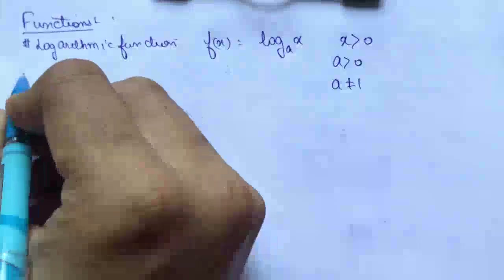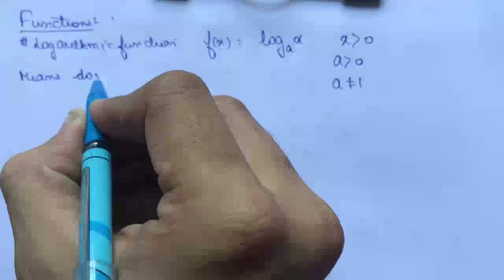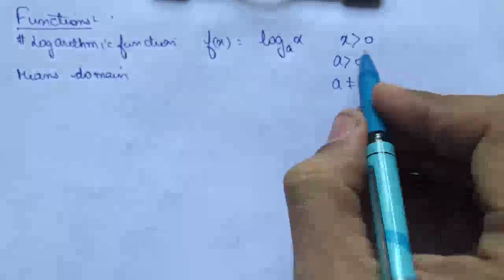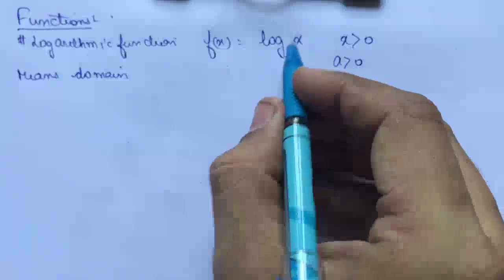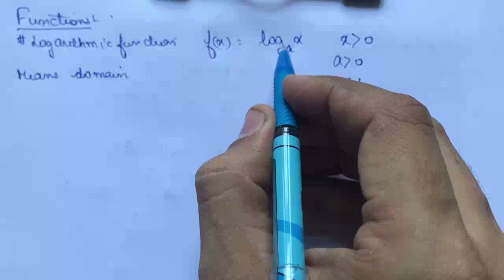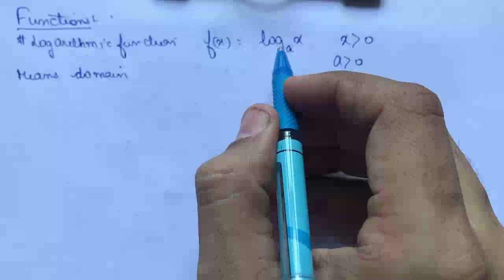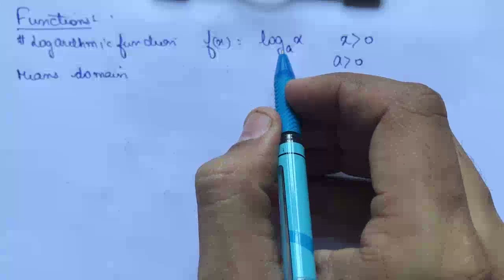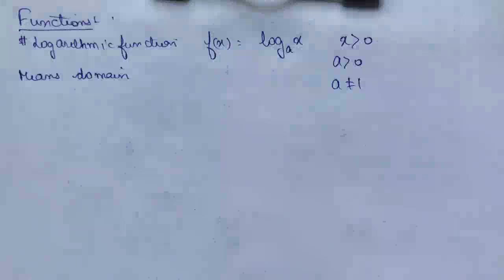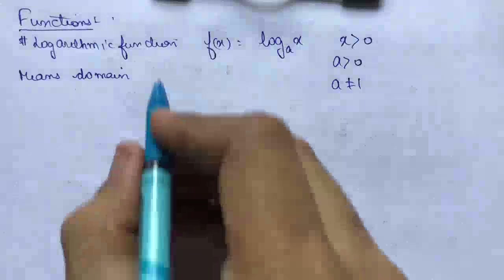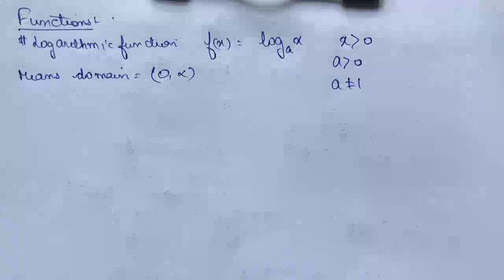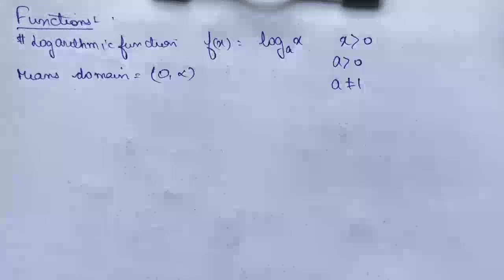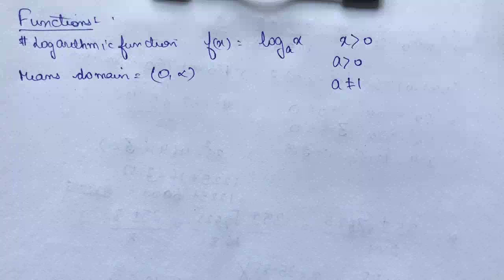So that means the domain of the function will be all x greater than 0 — starting from just after 0 to positive infinity, all will be in our domain. Domain will be 0 to infinity, but 0 is not to be included because log of 0 is not defined. So domain will be (0, ∞).